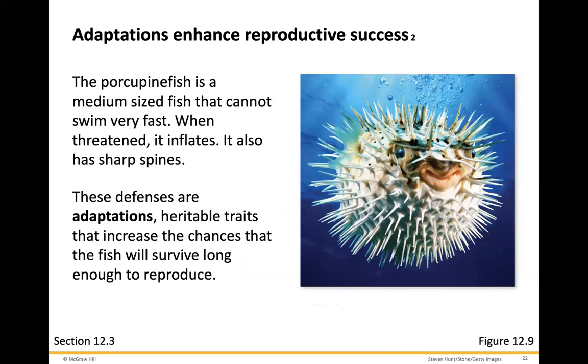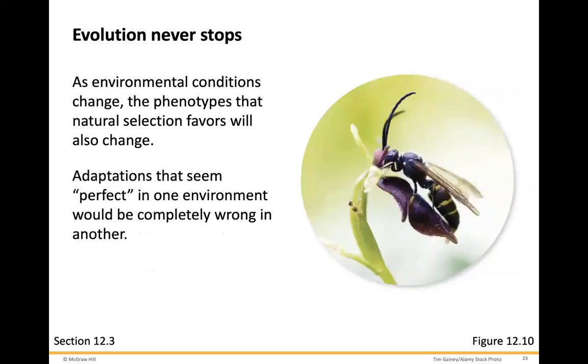Adaptations also enhance reproductive success. The porcupine fish is a medium-sized fish that cannot swim very fast. When threatened, it inflates and has sharp spines — these defenses are adaptations, heritable traits that increase the chances that the fish will survive long enough to reproduce. And one thing that's for sure is that evolution never stops. As environmental conditions change, the phenotypes that natural selection favors will also change.